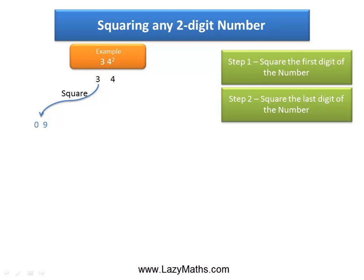The next step is to square the last digit of the number, which is 4. 4 squared, which is 4 times 4, is 16. As you can see, because 4 squared is a two-digit number (16), we actually write 3 squared as a two-digit number: 0, 9.